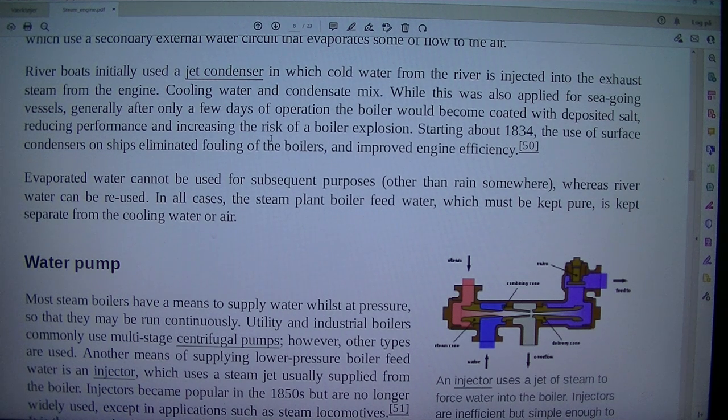Only a few days of operation, the boiler would become coated with deposited salt, reducing performance and increasing the risk of a boiler explosion. Starting about 1834, the use of surface condensers on ships eliminated fouling of the boilers and improved engine efficiency.